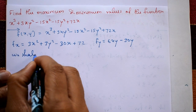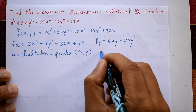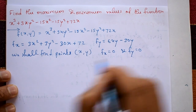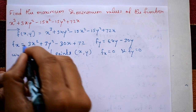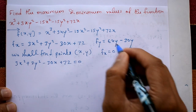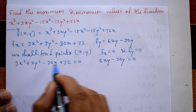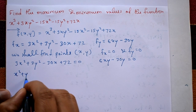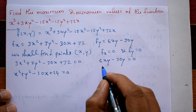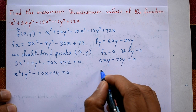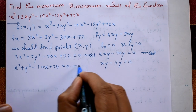To find stationary points, set dou f by dou x = 0 and dou f by dou y = 0. The first equation gives 3x² + 3y² - 30x + 72 = 0, which simplifies by dividing by 3 to x² + y² - 10x + 24 = 0 (equation 1). The second equation 6xy - 30y = 0 simplifies by dividing by 6 to xy - 5y = 0 (equation 2).